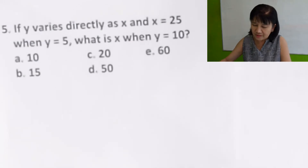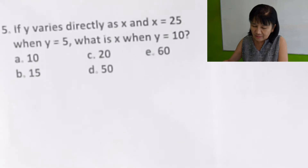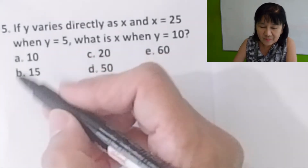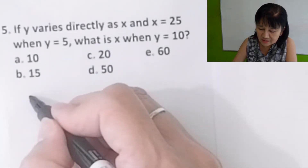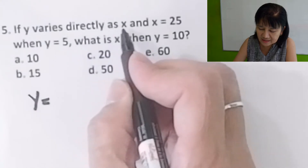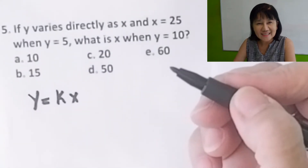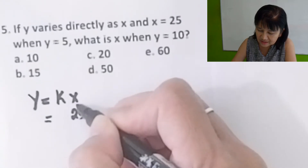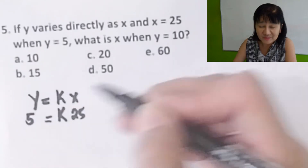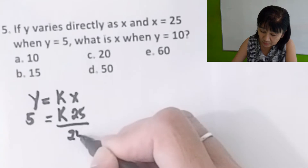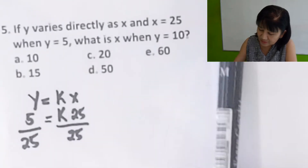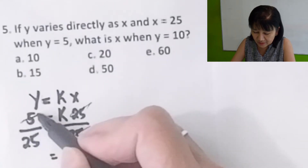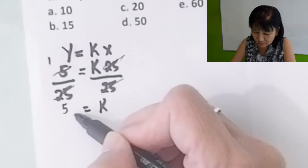Problem number 5: If y varies directly as x and x is 25 and y is 5, what is x when y is equal to 10? Direct variation. Write the equation first: y equals kx, where k is the constant of variation. Plug in x equals 25 and y equals 5. Solve for k by dividing both sides by 25. K equals 5 over 25, simplified to 1 over 5.